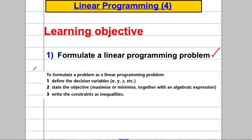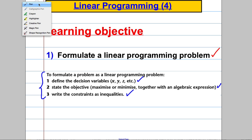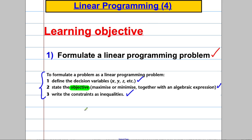To formulate a linear programming problem there are three things you have to be able to do: you define what's called your decision variables, you state your objective function, and lastly you write your constraints. The objective function is the thing you're trying to maximize or minimize — usually profit if you're maximizing, or costs if you're minimizing. Your constraints are inequalities representing the finite amounts of resources you have available.